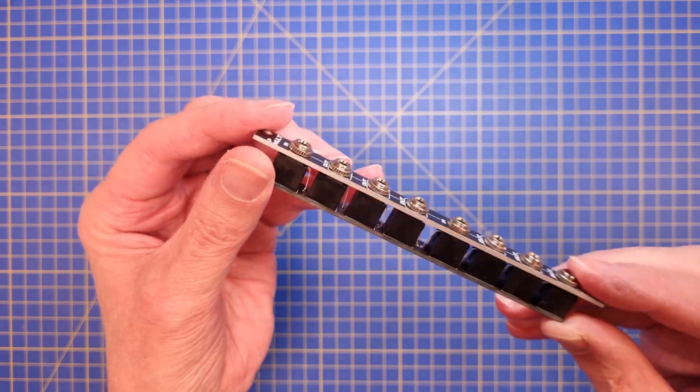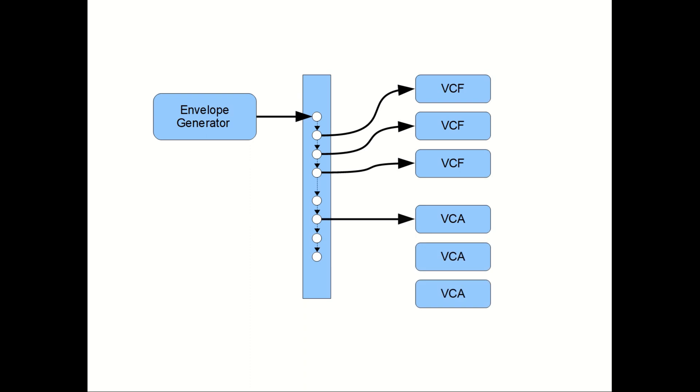A mult is used when you want to connect one output signal to multiple input jacks on your modules. The second input is normalled to the first one, which means that if you don't connect a cable to the second input, you will have a mult with one input connected to six outputs. If both inputs are used, you will split the module into two separate one-to-three mults.